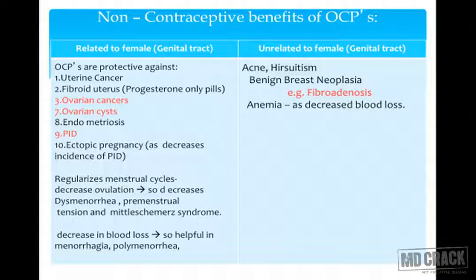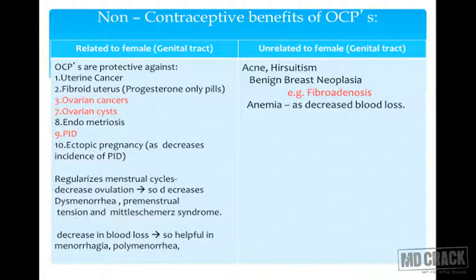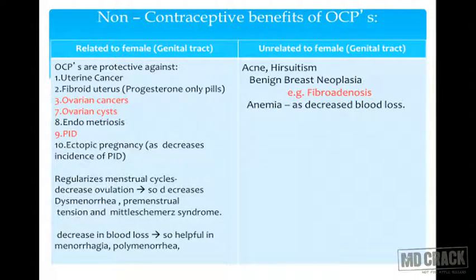Non-contraceptive benefits unrelated to the genital tract: OCPs can be used in acne and hirsutism — particularly OCPs containing cyproterone acetate — and in PCOS patients, helping regulate menstrual cycles, reducing hirsutism via cyproterone acetate, and managing acne. Also beneficial in autoimmune disorders of the thyroid, colorectal cancers, osteopenia, osteoporosis, benign breast neoplasms, rheumatoid arthritis, and anemia.